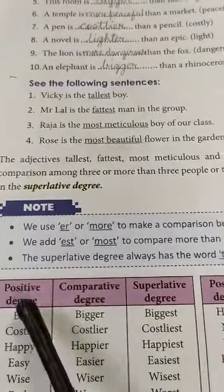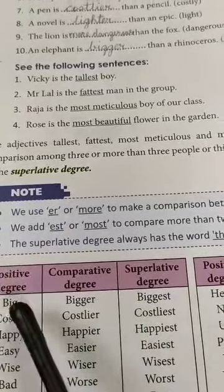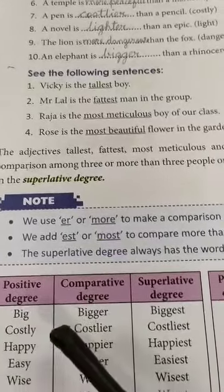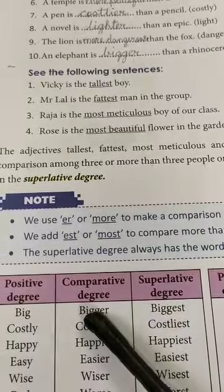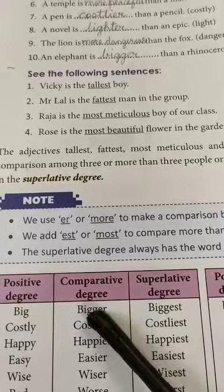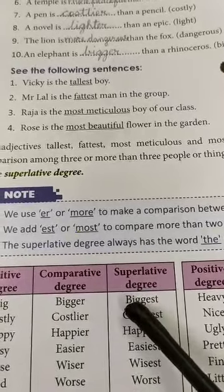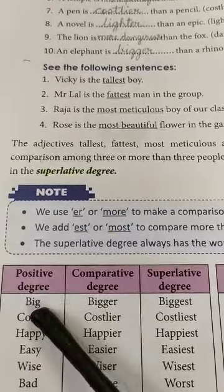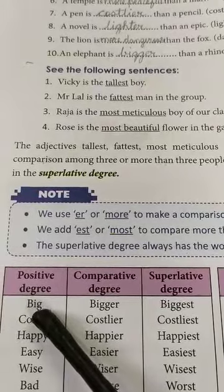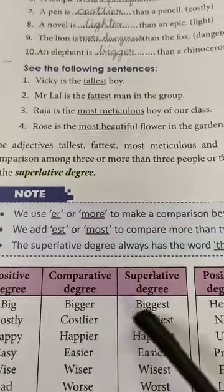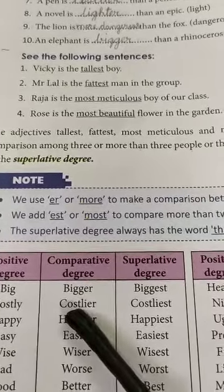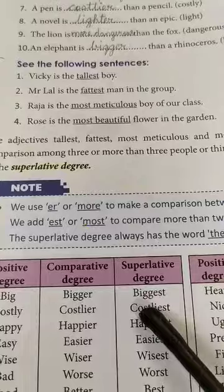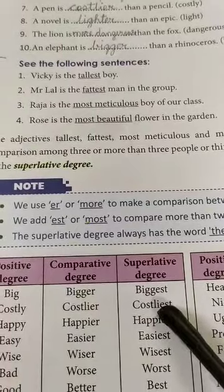Now see the table: positive degree, comparative degree, and superlative degree. Big → bigger (-er is added) → biggest (-est is added). In positive degree it is just an adjective. Costly → costlier (-ier added) → costliest (-iest added). Happy → happier → happiest. Easy → easier → easiest. Wise → wiser → wisest. Bad → worse → worst. Good → better → best.